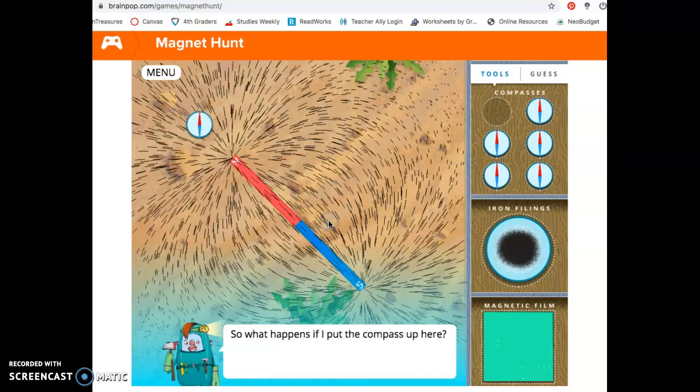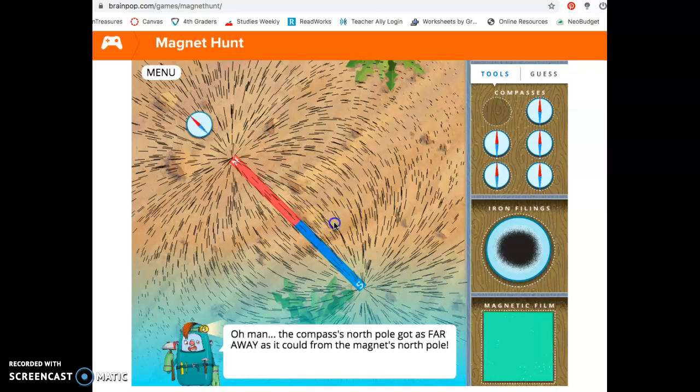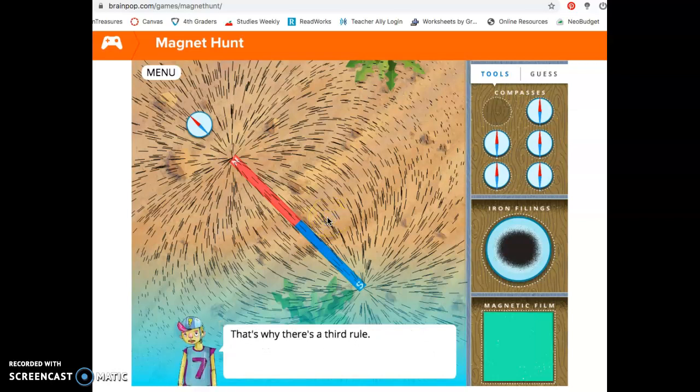Wow, I didn't know poles had arch enemies. What happens if I put the compass up here? Oh man, the compass's North Pole got as far away as it could from the magnet's North Pole. They really do hate each other. But wait, now the compass's North Pole is pointing away from the magnet's South Pole. I thought North and South were supposed to attract. What gives? That's why there's a third rule. Rule 3. The farther away, the weaker the effect. The North Pole, the compass, is super close to the magnet's North Pole. So it wants to get away from North even more. Oh, I get it. So what happens if I put the compass right here? The compass just follows the magnetic field. It doesn't point it North or South. It's right in the middle, so it can't decide. See how the iron filings and the compass line up? That's because they both just depend on the magnet's poles. Wow, those poles are pretty strong. Can we practice now? Sure, drag around some compasses to see how they work.